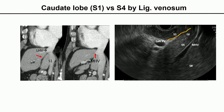Ligamentum venosum is a very important landmark. This ligament separates the caudate lobe S1 from S4. When the EUS probe is rotated more clockwise, going back to the EG junction or the gastroesophageal area, the ligamentum venosum is seen as a thick hyperechoic band on the EUS image. Ligamentum venosum extends up to the termination of the left hepatic vein and middle hepatic vein. The inferior vena cava covers S1, and S4 is divided by the ligamentum venosum. The middle hepatic vein divides S4 from S8.